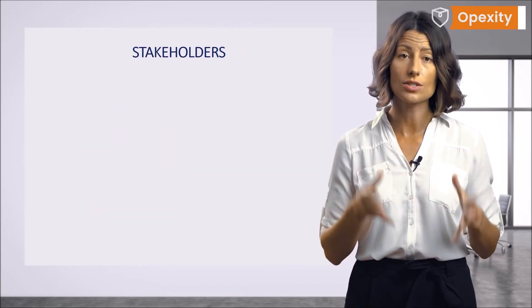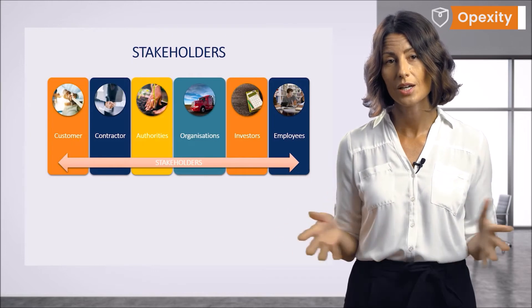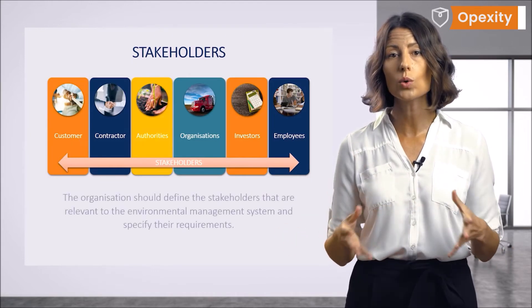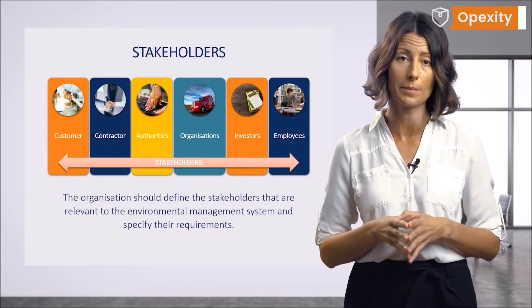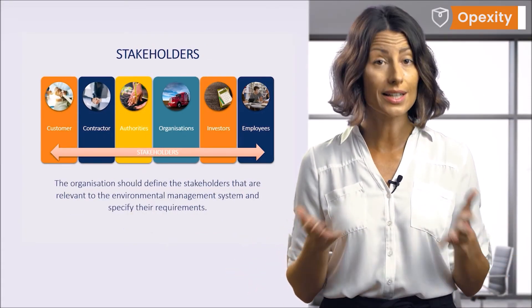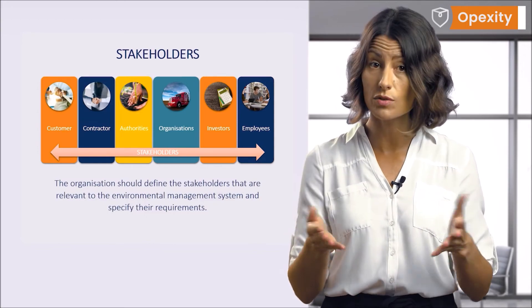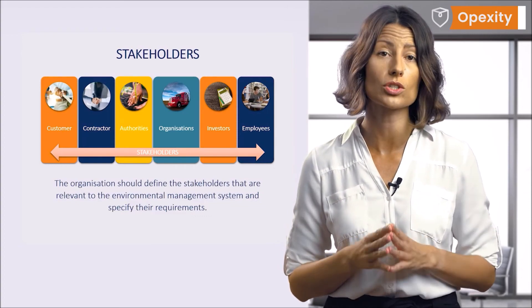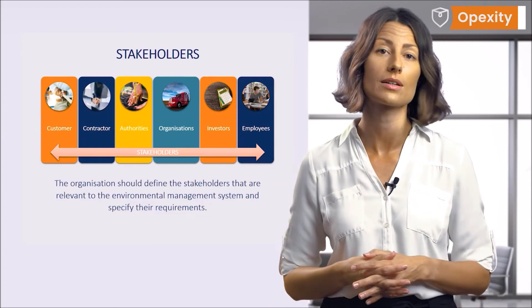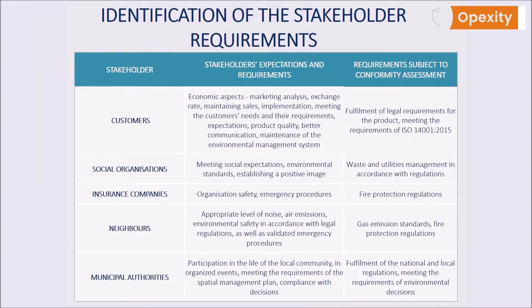Having analyzed the organization's internal and external environment, we can focus on the needs and expectations of the so-called stakeholders. The organization should define the stakeholders relevant to the environmental management system and specify their requirements. Stakeholders include customers, social groups such as neighbors, suppliers, contractors including subcontractors and service providers, authorities, NGOs, the sanitary epidemiological service, technical inspection office, investors, and employees. The subsequent step is to identify stakeholder requirements and determine which of these automatically constitute a compliance obligation.